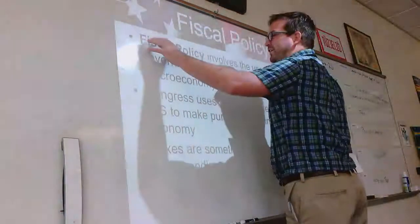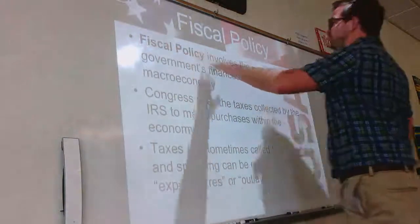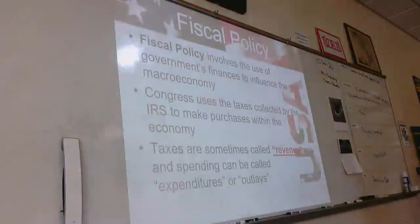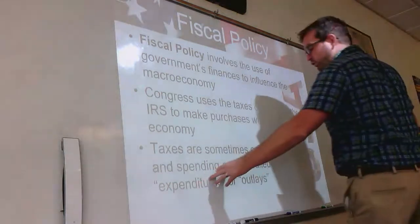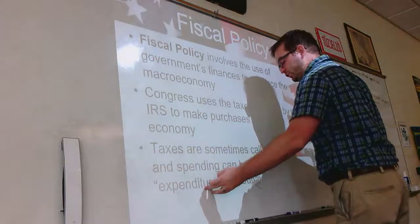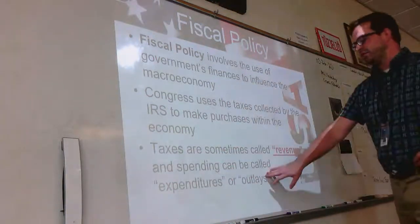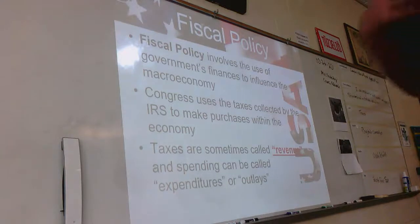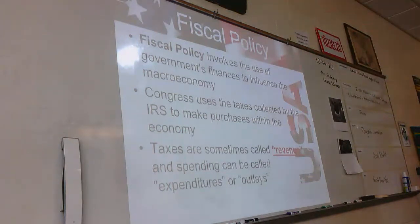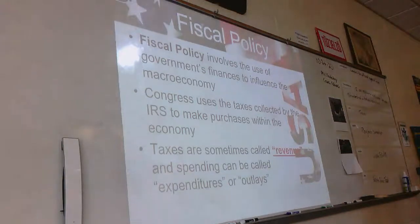When you think about fiscal, think of financial. It's the financial policy of our government — how they collect taxes, how they spend money, and what their goals are for doing this. We also call these expenditures, ways that we spend money. You might also see it as outlays. The government takes in money via taxes and then spends it in a lot of different areas, and we'll look at how the government tries to influence our economy by doing this.